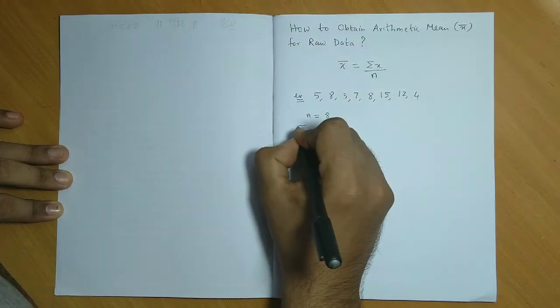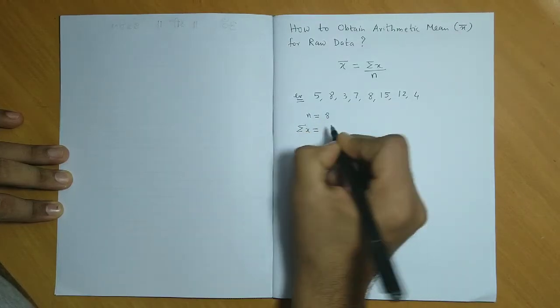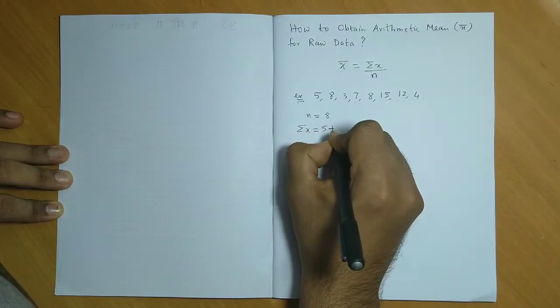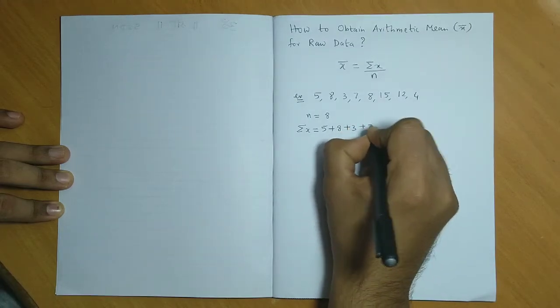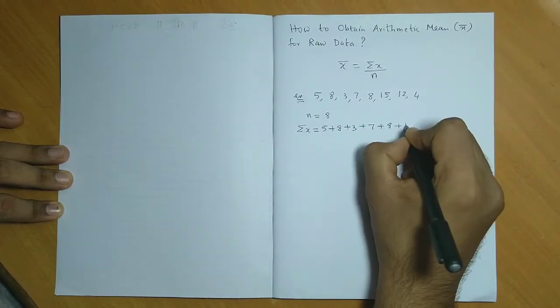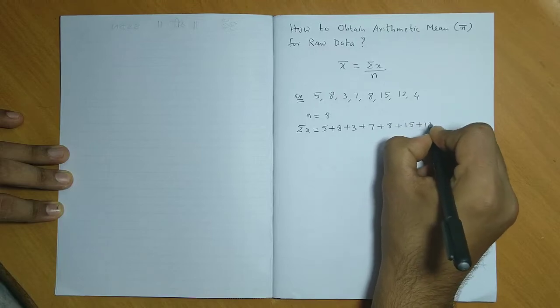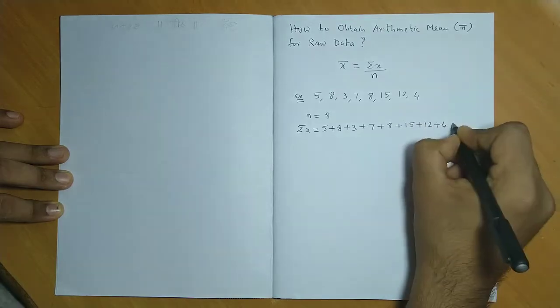Then let us find the sum of these observations. That is 5 plus 8 plus 3 plus 7 plus 8 plus 15 plus 12 plus 4.